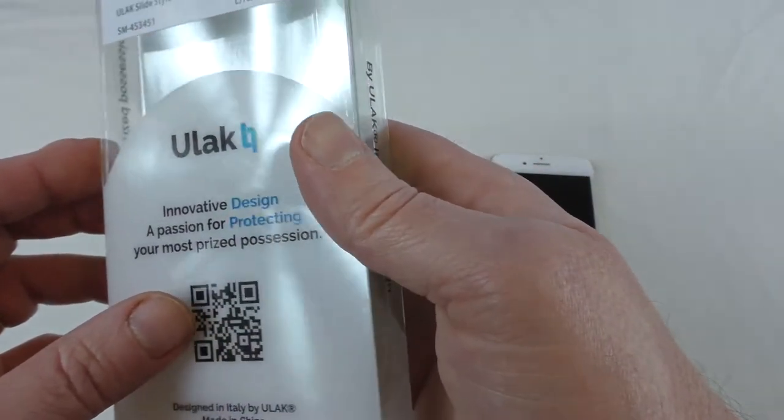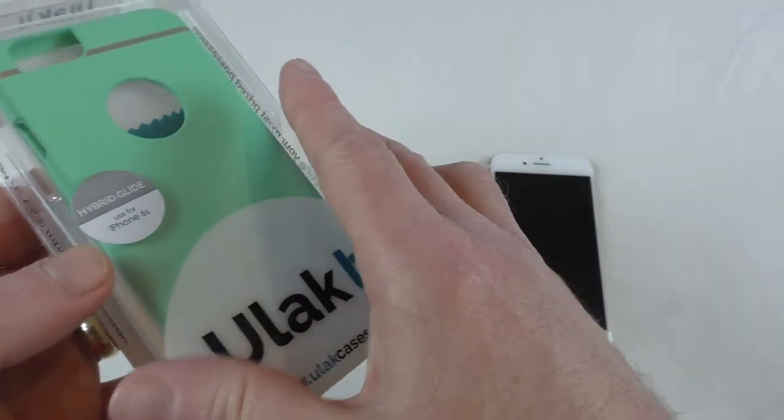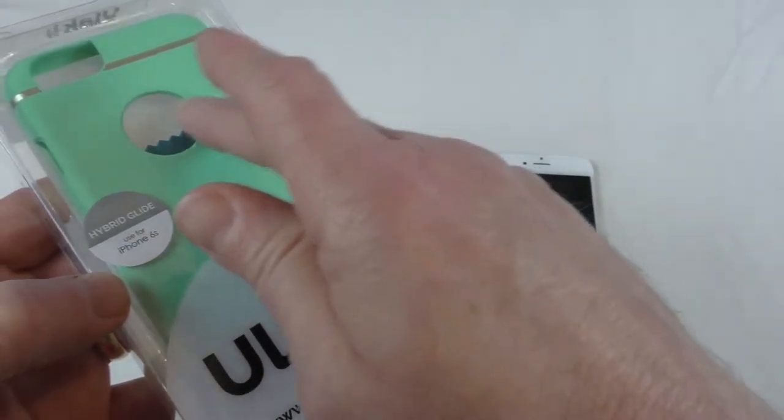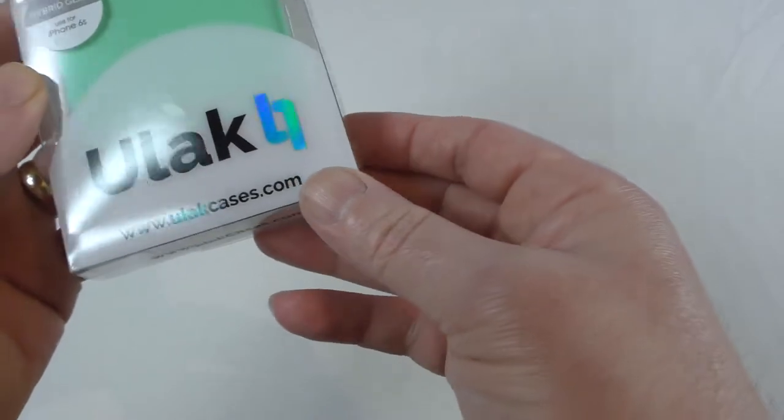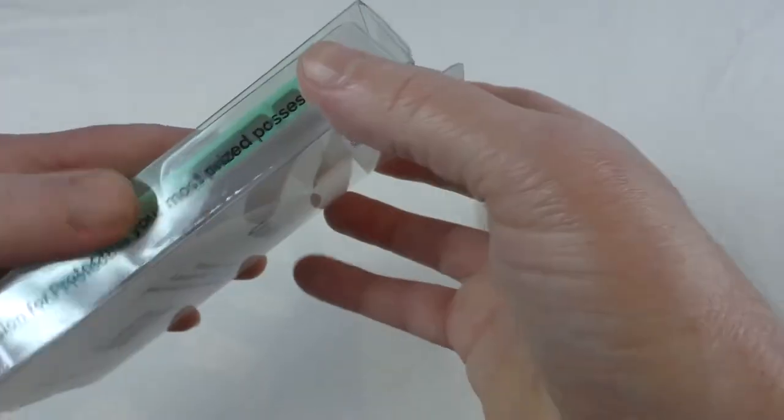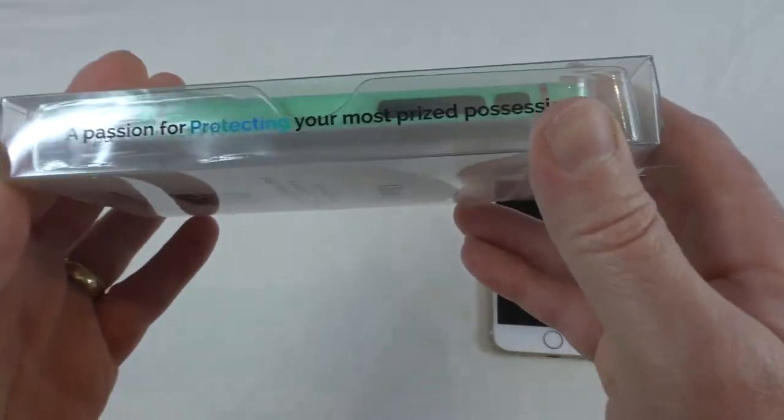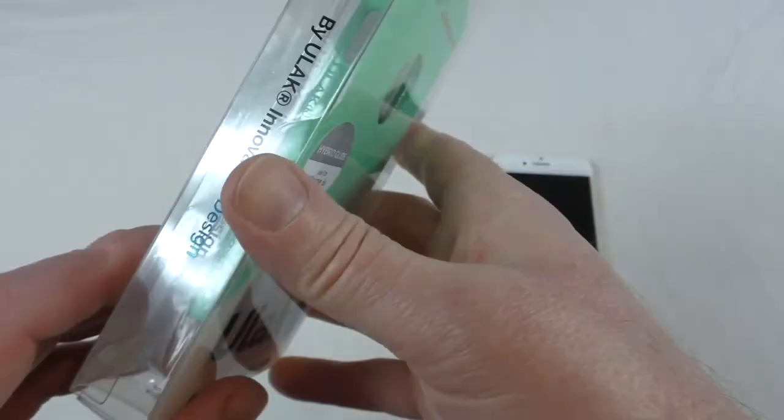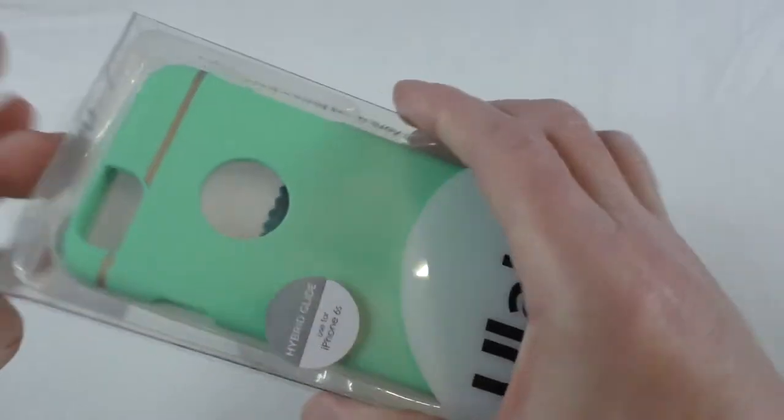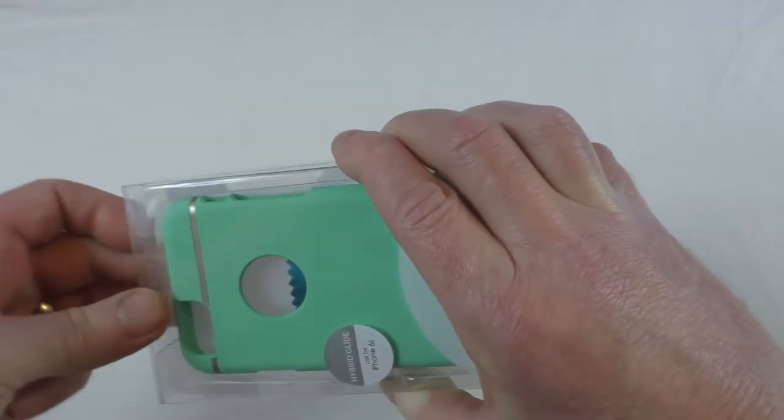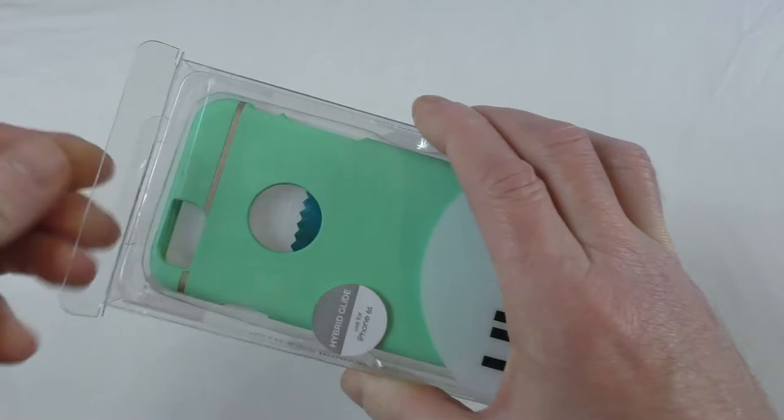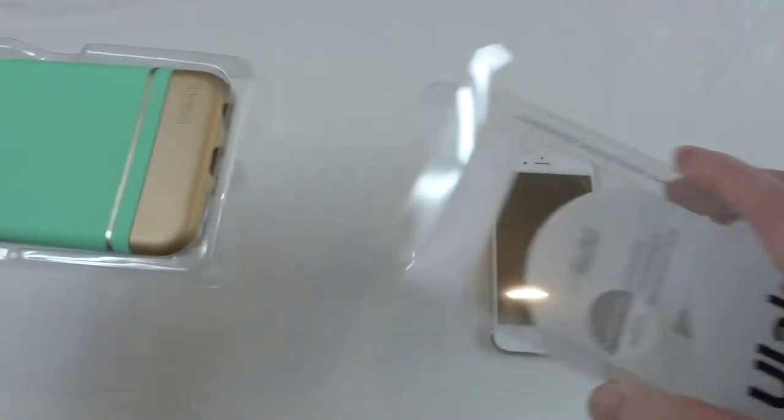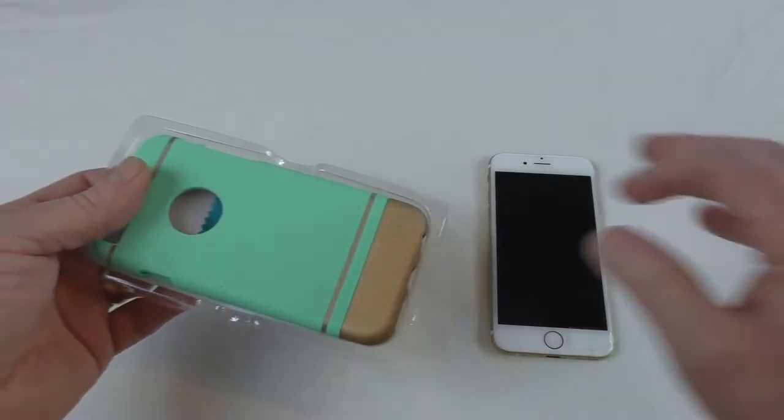This one's got a nice little bonus—you get a free glass screen protector with this as well, which is really a nice touch for when you buy a case. A passion for protecting your most prized possessions. Ulak are doing some really nice stuff. It just comes in a plain plastic box. This one's in the mint green—they come in several different colors.